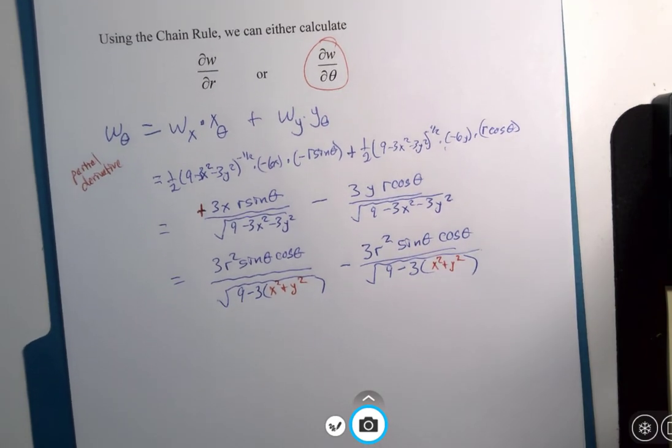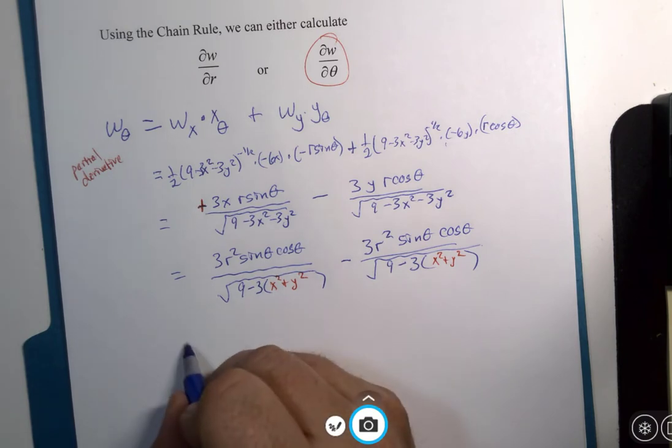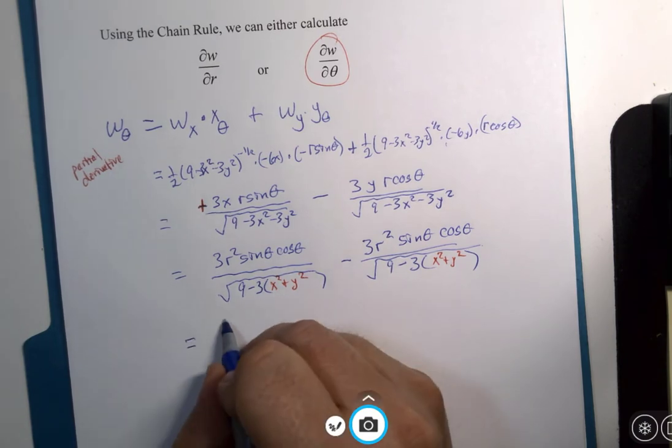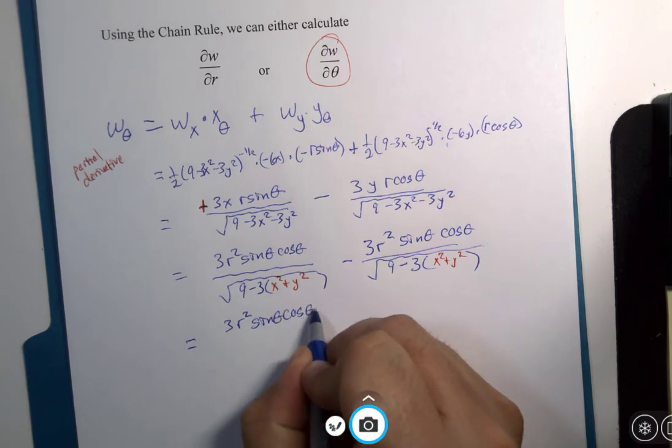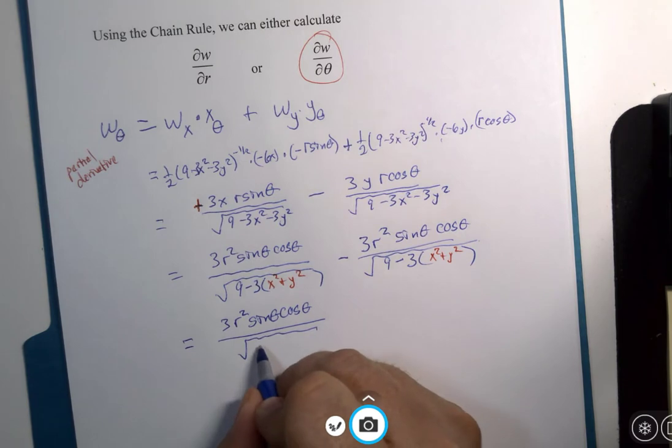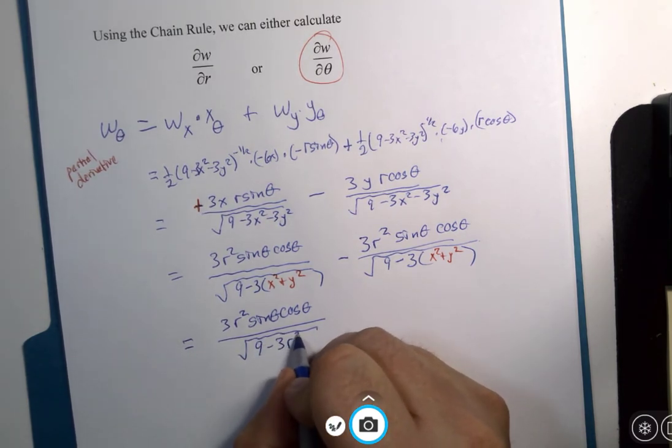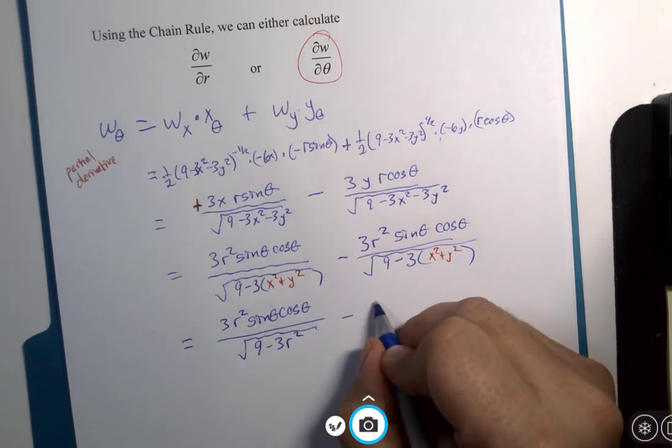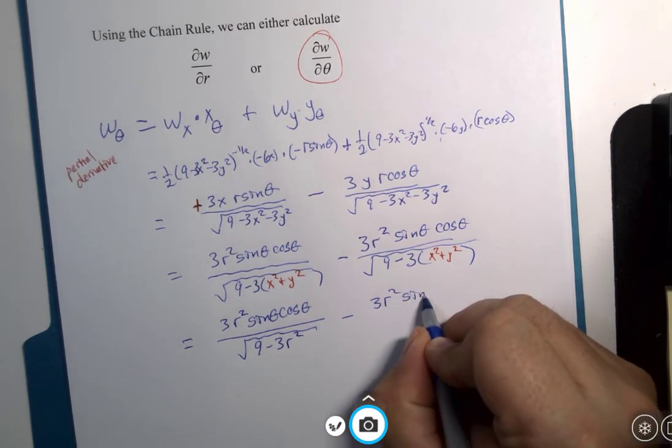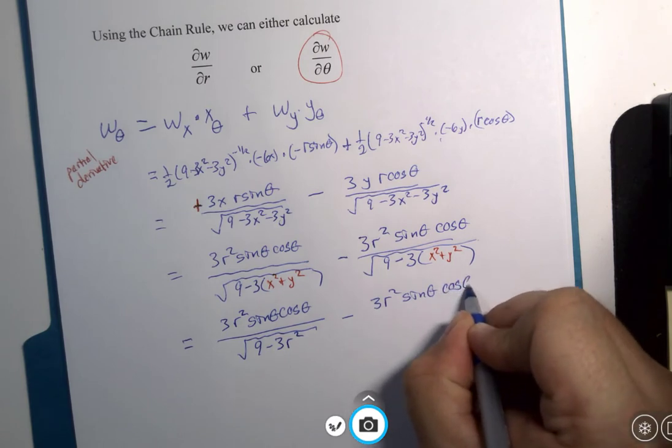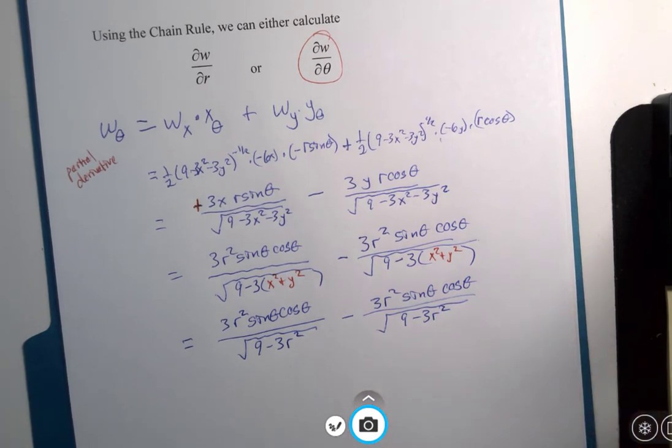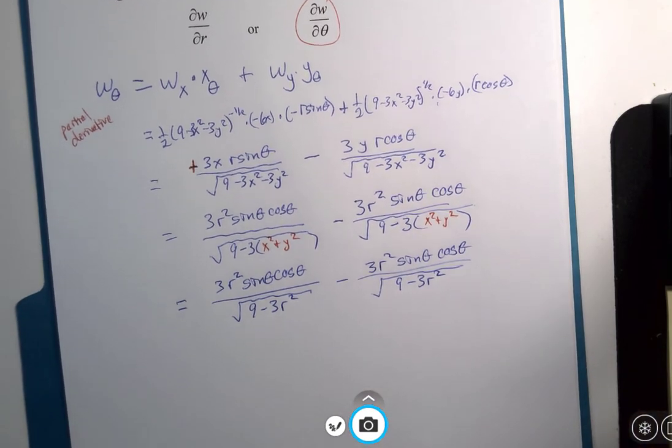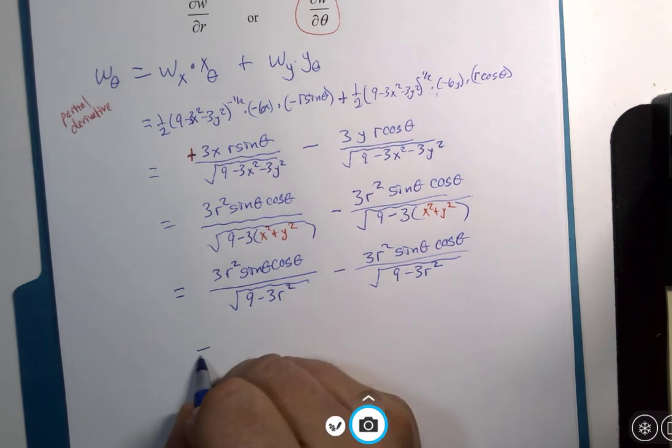If you haven't seen what we're getting towards, we're about to. If I take the time to finish my substitutions, I'm not paying attention to the whole picture, which happens sometimes when we're trying to finish a task. It's harder to see the big picture. Three r squared minus r squared sine theta cosine theta. Can you see it yet? Nine minus three r squared. Yep, that's what it is. That's zero.